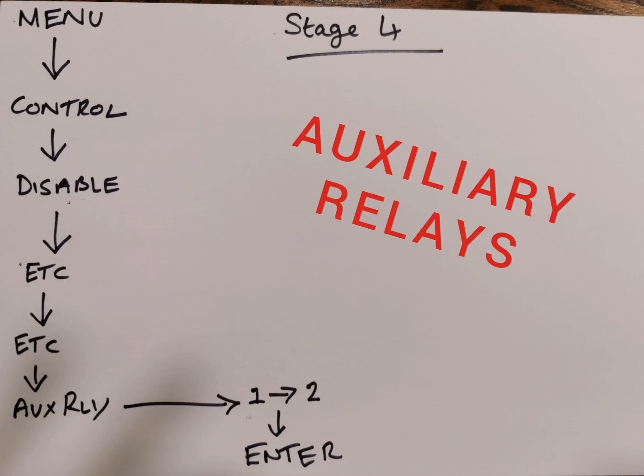Now hit the etc button twice until you see auxiliary relay abbreviated to fit in its bracket as aux rly. Now you can press this button and type the numbers 1 through 2, now hit the enter button. Congratulations, your standalone fire alarm system will not sound no matter what you do to it.